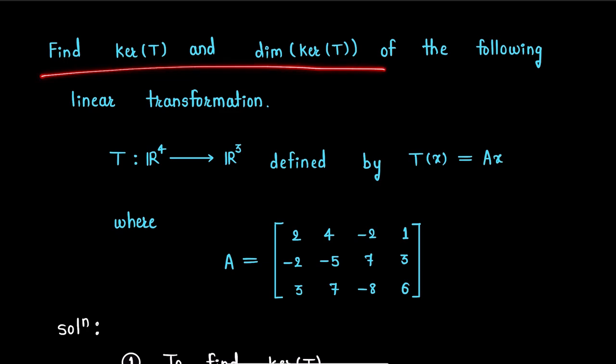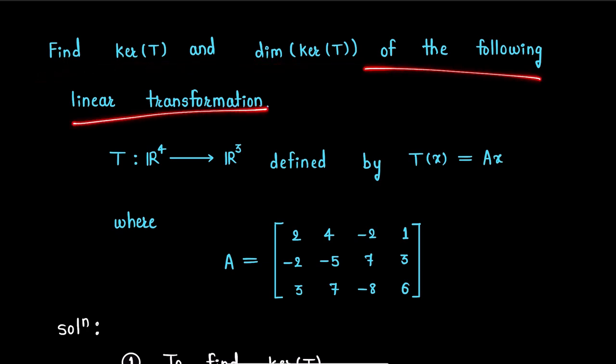Question is, find kernel T and dimension of kernel T of the following linear transformation, where T is a linear transformation from vector space R4 to R3, which is defined by T(x) equals Ax, where A is this 3 by 4 matrix.